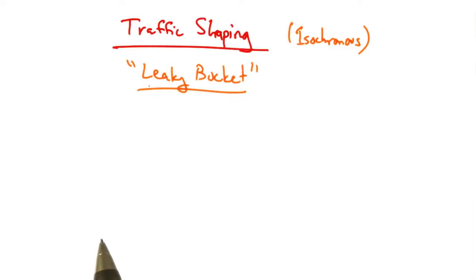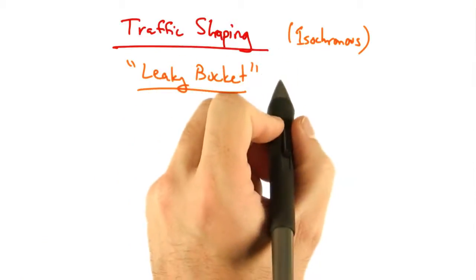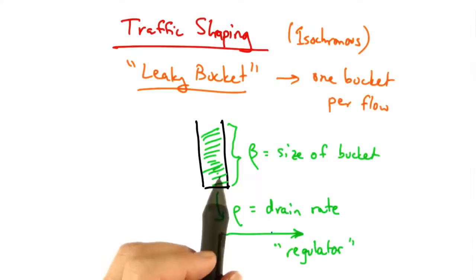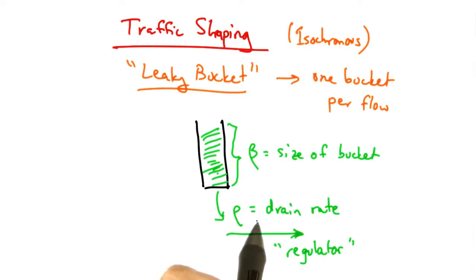One way of shaping traffic is with what's called a leaky bucket traffic shaper, where each flow has its own bucket. In a leaky bucket traffic shaper, data arrives in a bucket of size beta and drains from the bucket at rate rho.